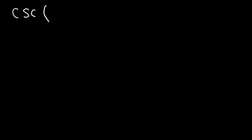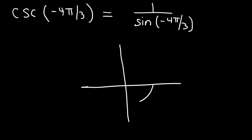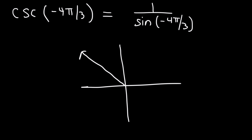Now let's work on cosecant of negative 4π/3. Cosecant is 1 over sine. Let's plot negative 4π/3: the markers are negative π/3, negative 2π/3, negative 3π/3 (which is negative π), then negative 4π/3. Adding 2π (which is 6π/3) gives the coterminal angle positive 2π/3, located in quadrant 2. The reference angle is therefore π/3, which equals 60 degrees.